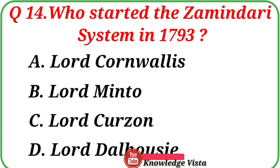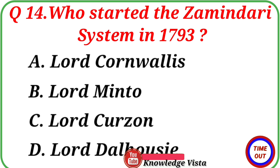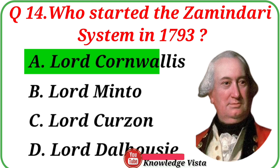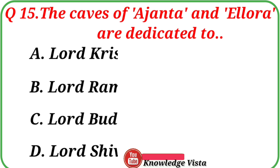Question number fourteen: Who started the Zamindari system in 1793? Your options are: A. Lord Cornwallis, B. Lord Minto, C. Lord Curzon, D. Lord Dalhousie. Correct answer is option A, Lord Cornwallis.